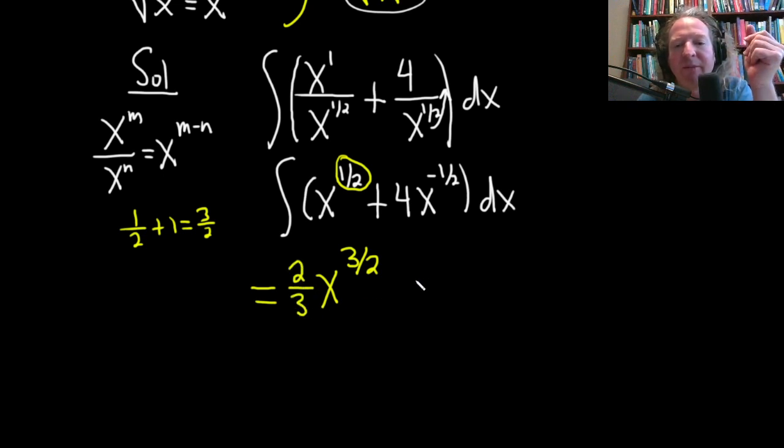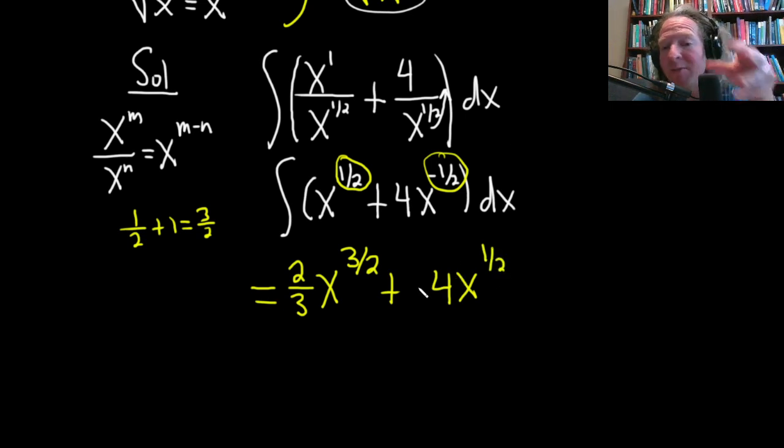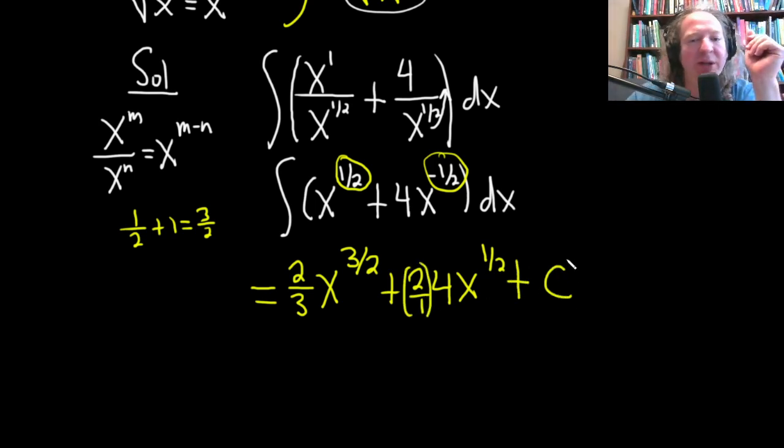So 2 thirds plus 4. I'm going to leave some room here. And this is x. We add 1 to the negative 1 half, so that's 2 halves plus negative 1 half, so that's 1 half. And then dividing by 1 half is the same thing as multiplying by 2 over 1. And then plus our constant of integration, capital C.